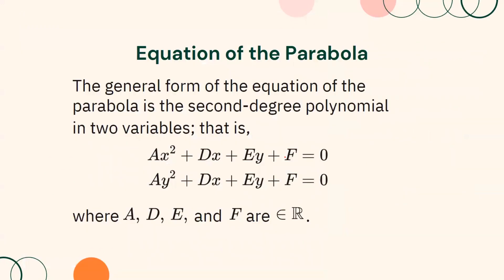Let us now see the general form of the equations of a parabola. The general form is a second-degree polynomial in two variables. That is, ax² + dx + ey + f = 0, or ay² + dx + ey + f = 0, where a, d, e, and f are real numbers. Remember that the general form of an equation of a parabola has only one term in second degree — either x squared or y squared.